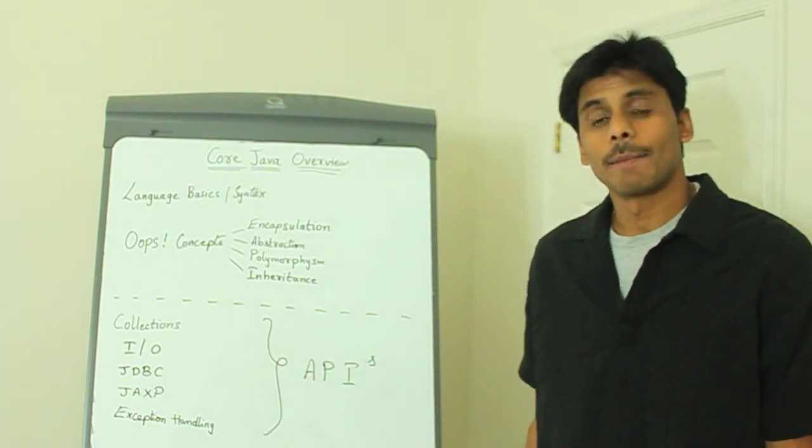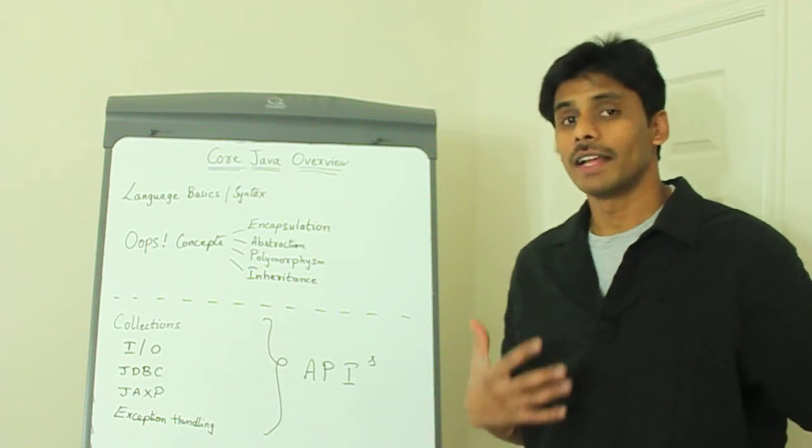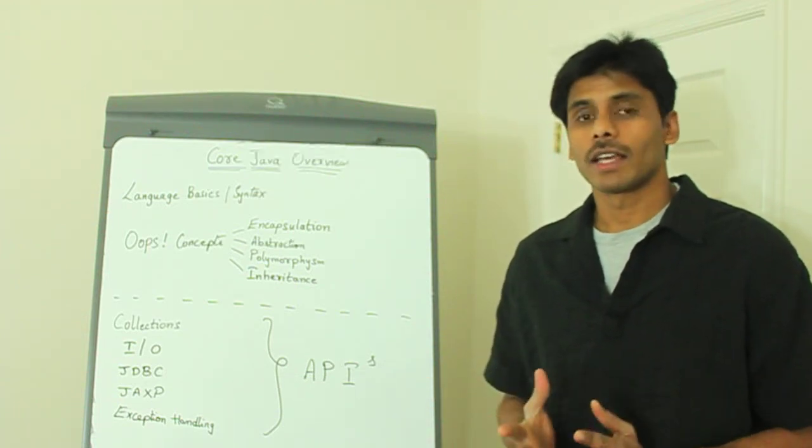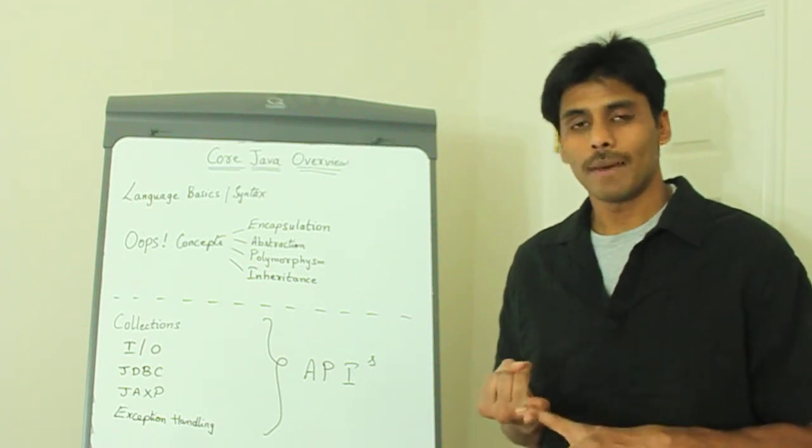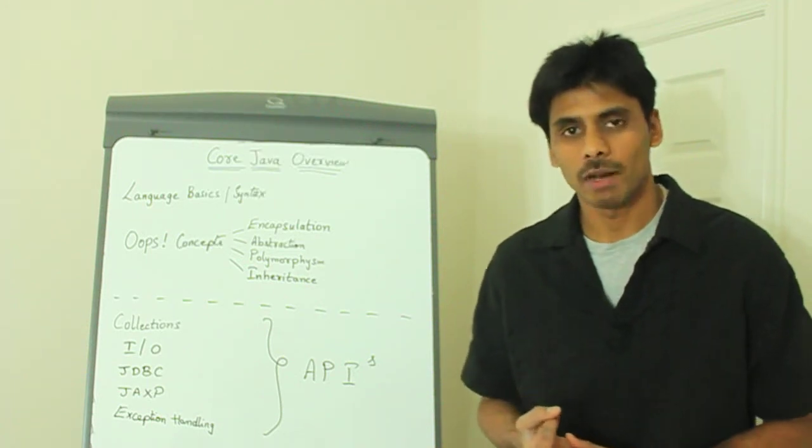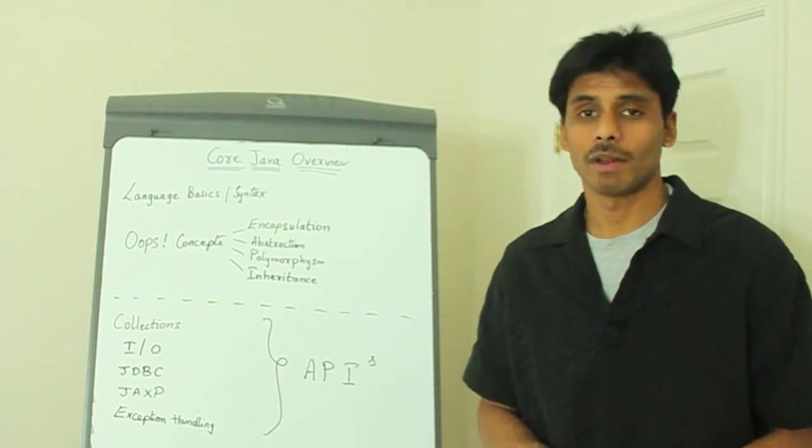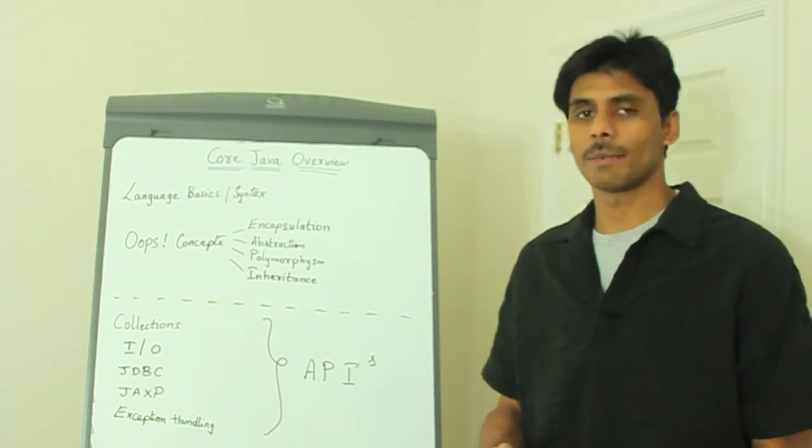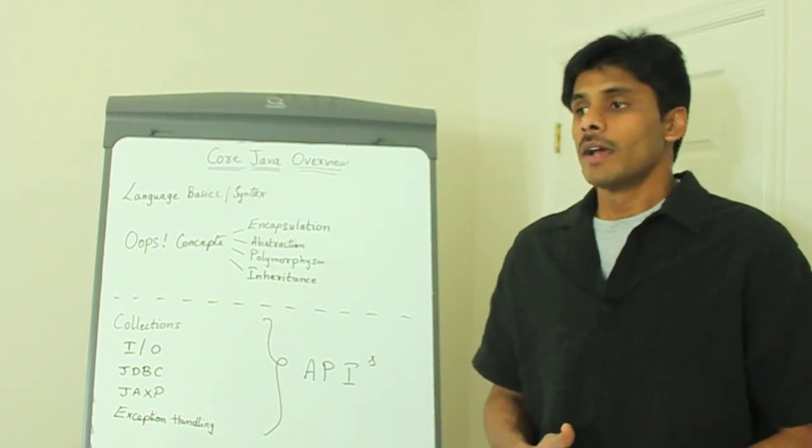JAXP stands for Java API for XML parsing. These interfaces allow you to do everything that's possible in XML: DOM parsing, SACS parsing, validating your XML file, applying a stylesheet to your XML file to convert it into HTML or XML or another XML, etc.